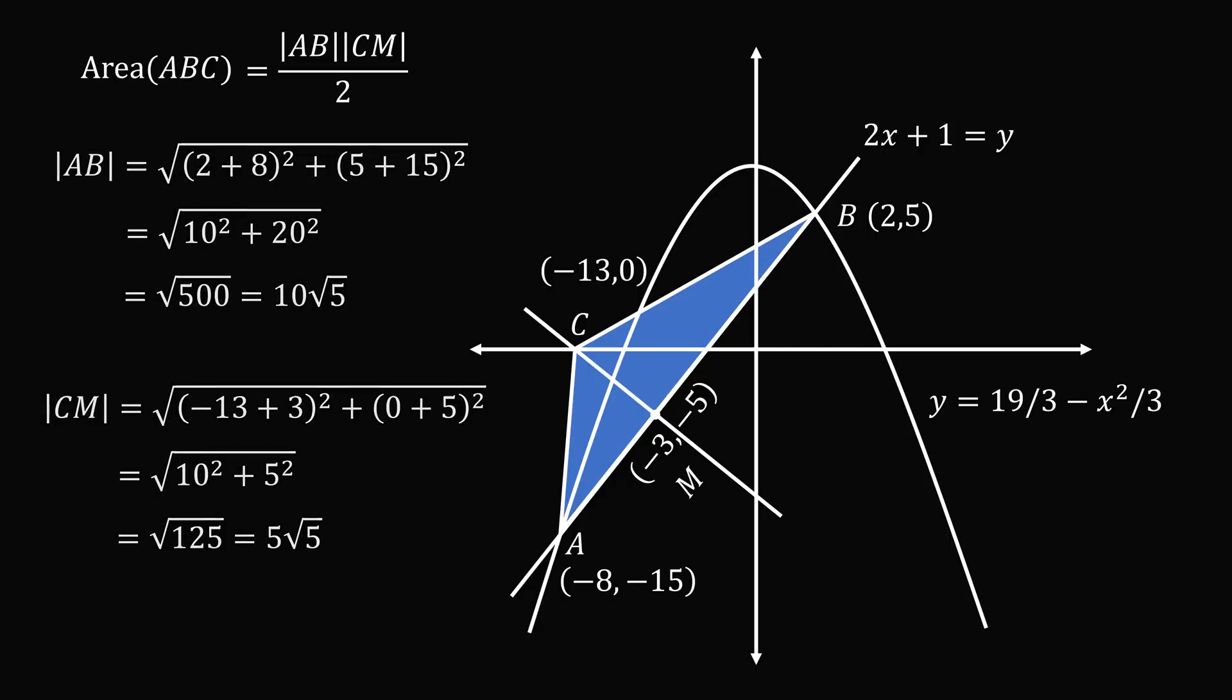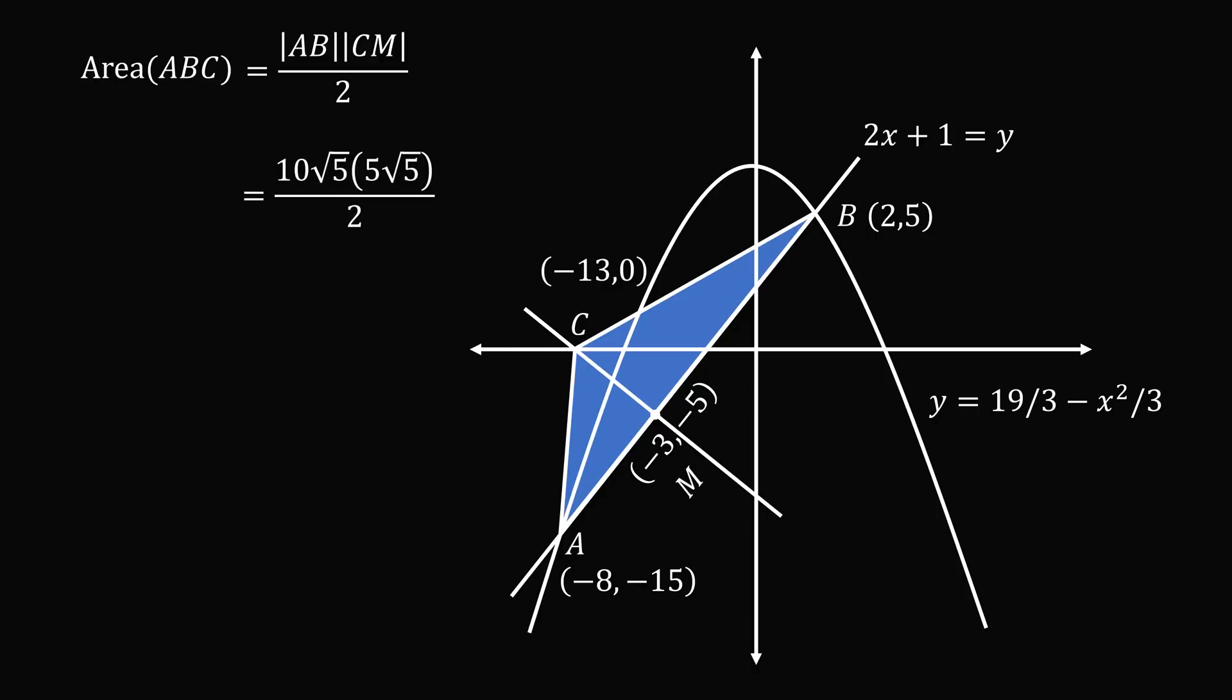So let's substitute these values in. We have 10 root 5 multiplied by 5 root 5 all over 2. The root 5s will work out to be root 5 times root 5 equals 5. 10 times 5 equals 50. So we have 50 times 5 all over 2. So that's 250 divided by 2, and that gives us the answer of 125.